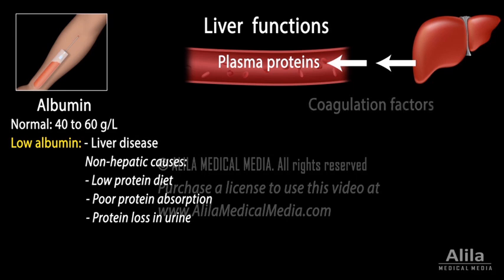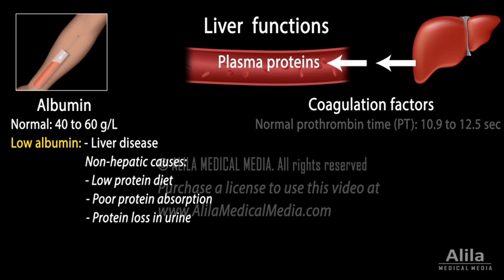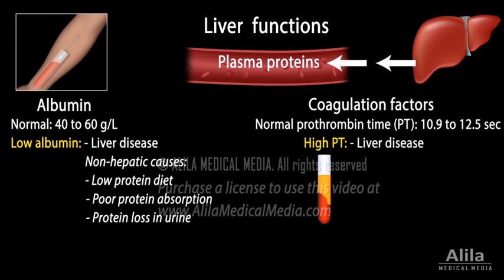Because the liver synthesizes most of the factors required for blood clotting, reduced liver function leads to fewer coagulation factors produced and delayed coagulation. Prothrombin time, PT, or pro-time test measures the time the blood takes to clot. Normal PT is between 10.9 and 12.5 seconds. A higher than normal PT means the blood takes longer to clot and may indicate liver damage.